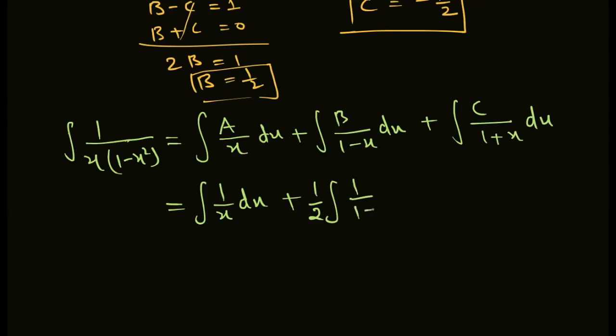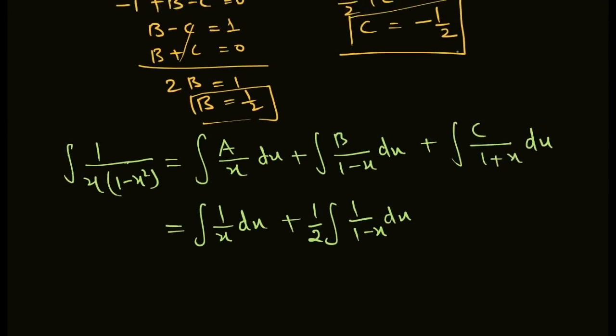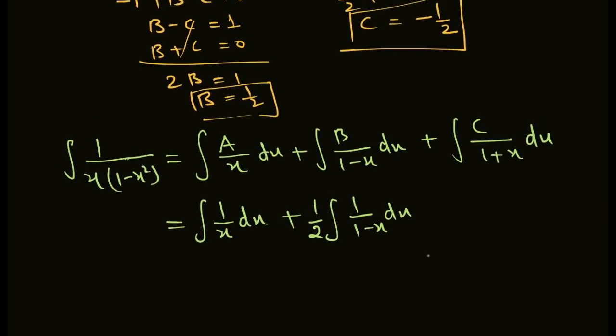B is 1 upon (1 minus x) dx, and C equals negative 1 by 2, so minus 1 by 2 times 1 upon (1 plus x) dx.